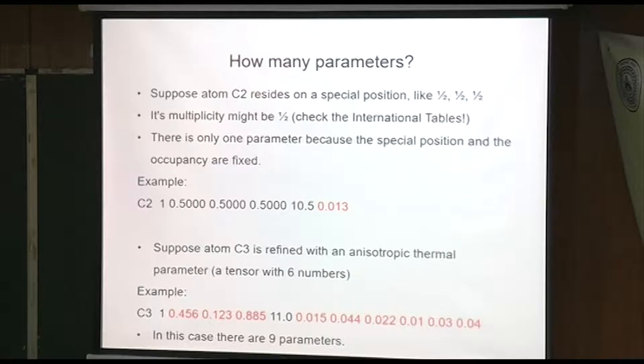Let's go back to the number of parameters idea. When an atom sits on a special position, its occupancy is no longer full. In this case, let's say the special position is a half, a half, a half. The occupancy is only a half, adding tens to it to fix it. Here we have a thermal parameter. So the only variable in this atom line is the thermal parameter. If it's anisotropic, then you're going to have x, y, z, and then the six thermal parameter values. So there are nine parameters.